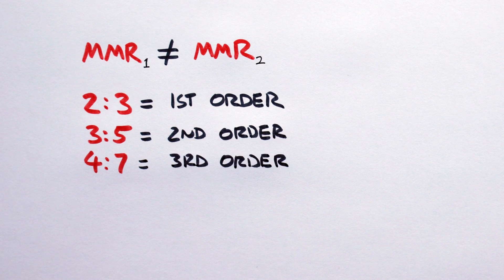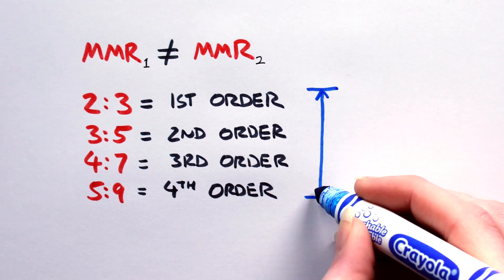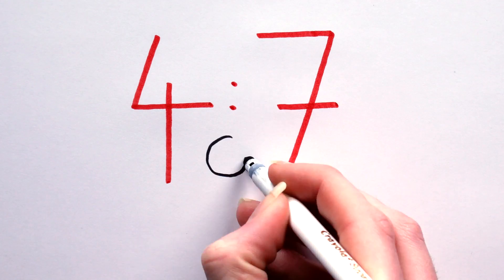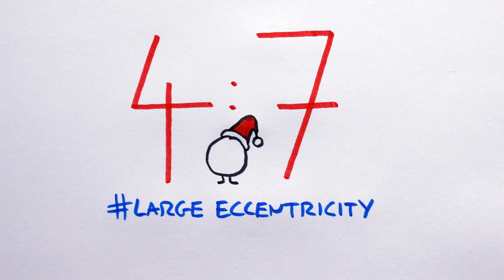Third order resonances will be less stable again, fourth less again, etc. The more stable the resonance, the more objects we can place there. That said, the weaker resonances could well be home to dwarf planets, just their orbital eccentricities will need to be high to compensate for the lack of inherent stability.